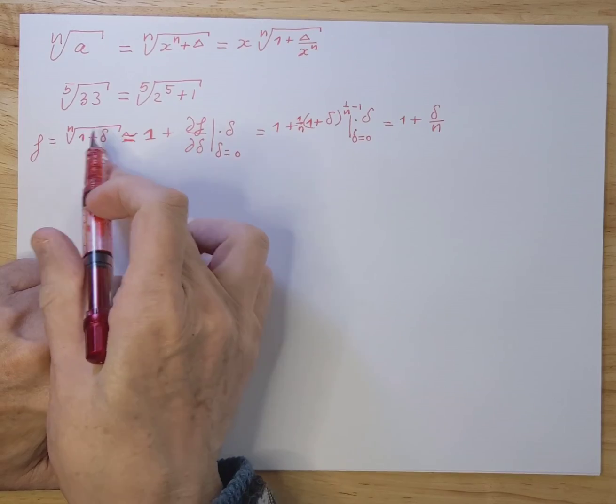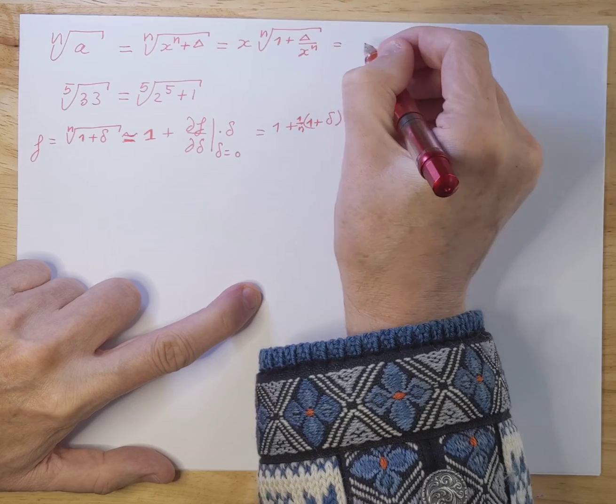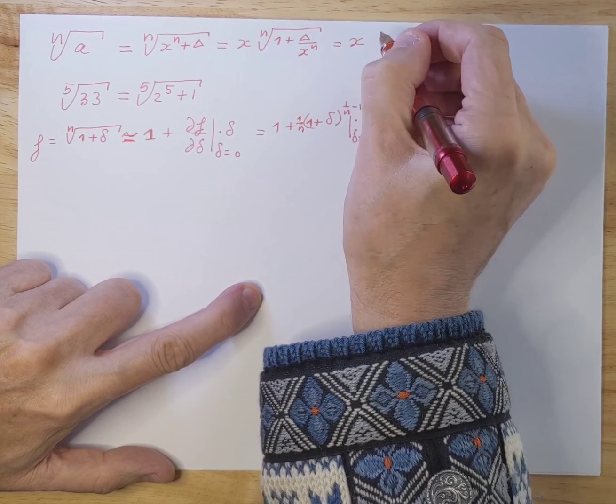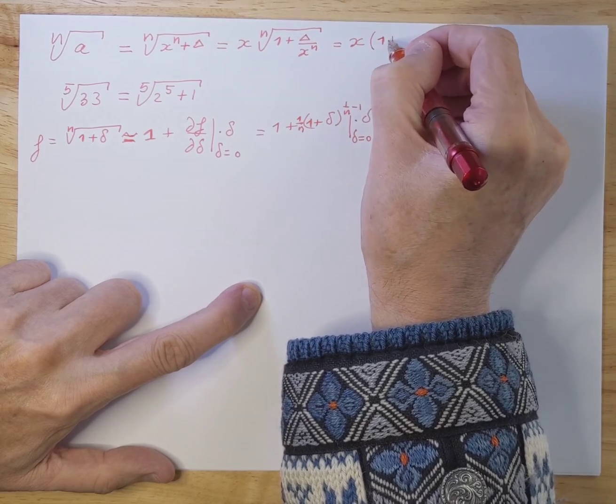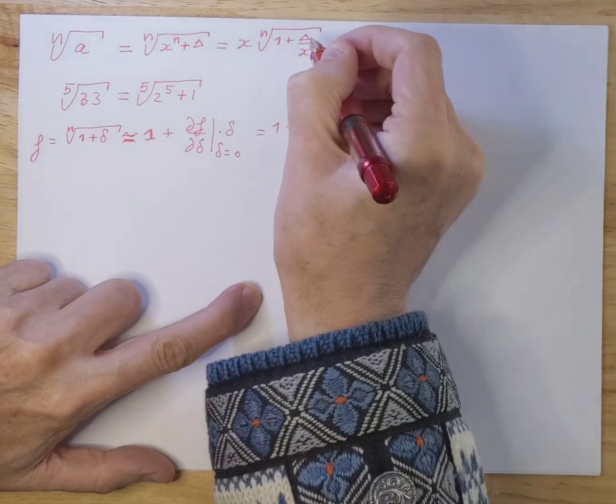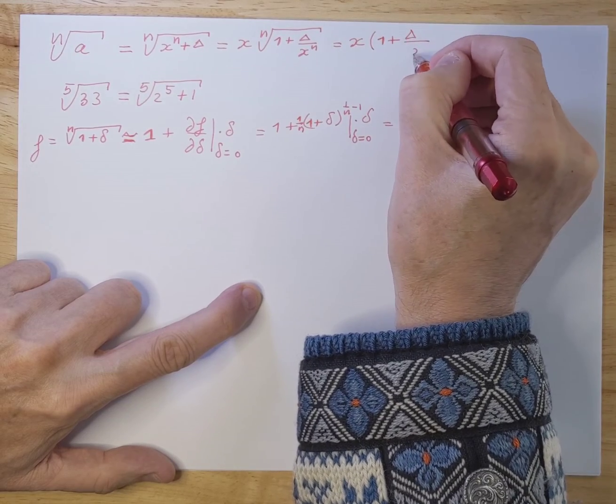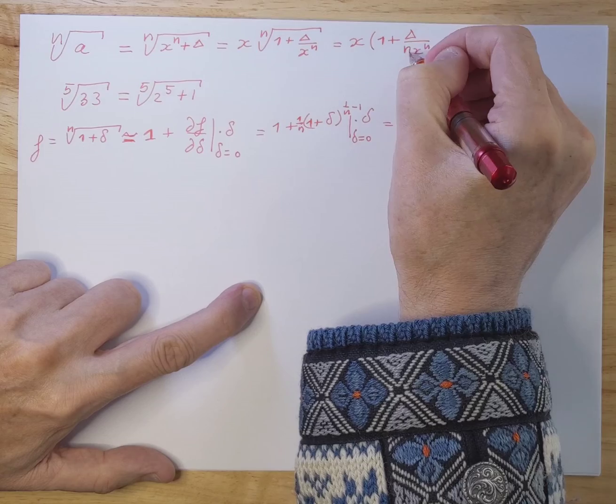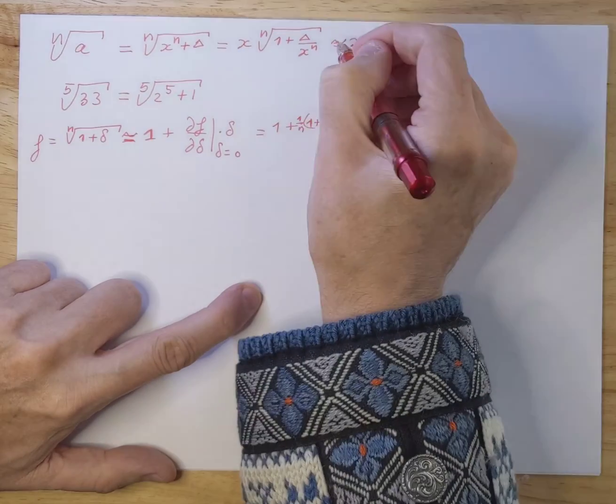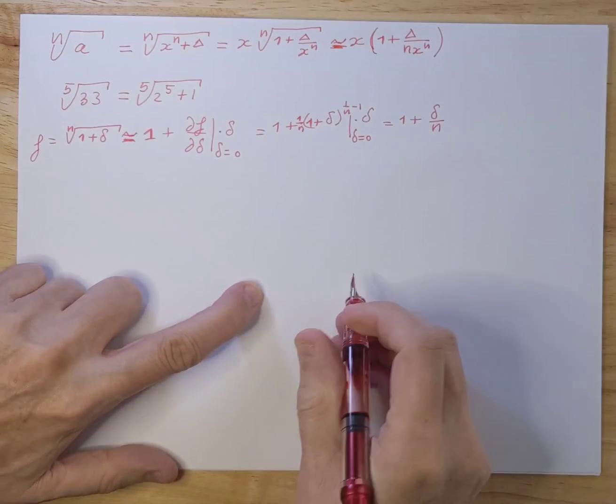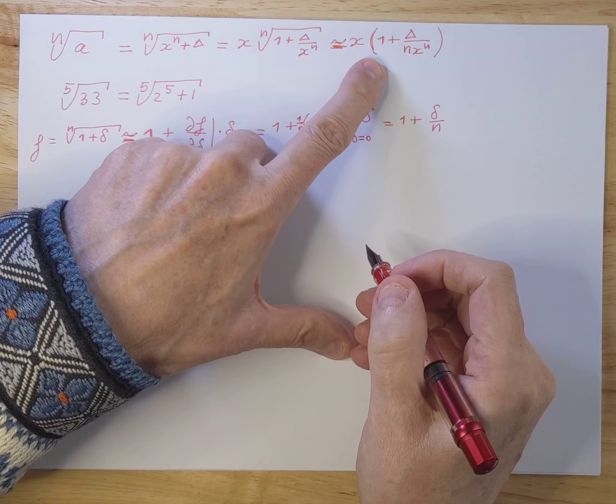So this nth square root is nothing more than 1 plus delta over n. So if we fill that back out in here we get x and then we get 1 plus delta. Now delta is now this piece so that's delta over x to the nth divided by n. So this is what we will get approximately if we approximate this square root, it's approximately this.